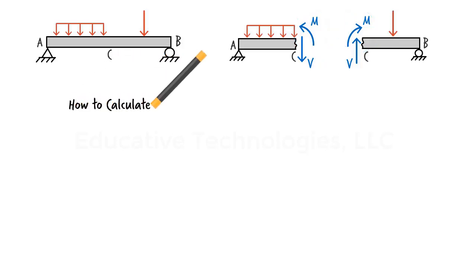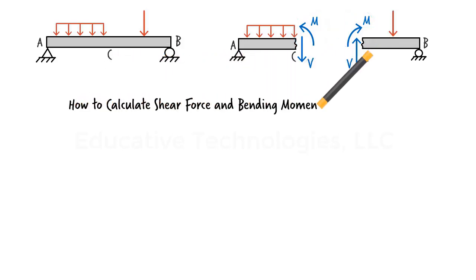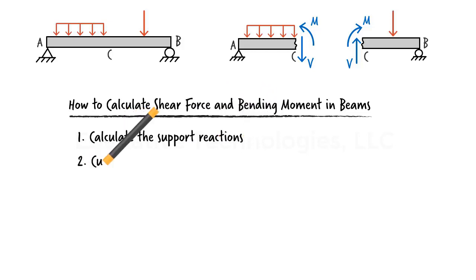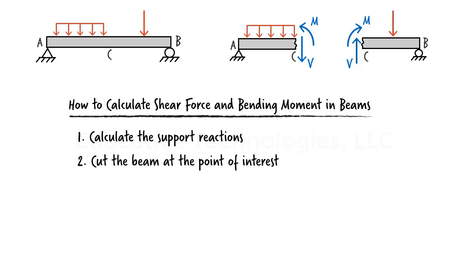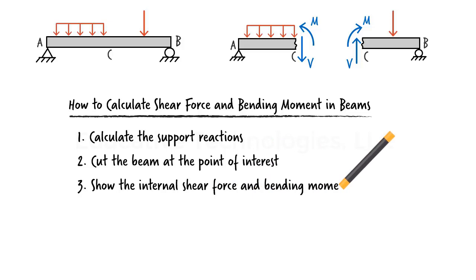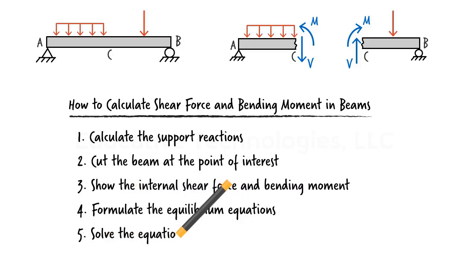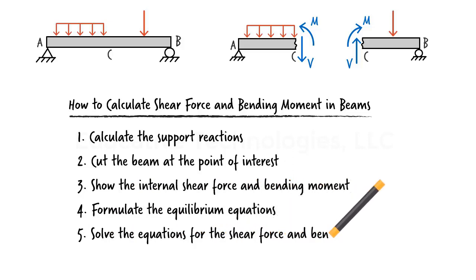Now let's see how we can calculate shear and moment at a point in a beam. The procedure is straightforward: 1. Calculate the beam's support reactions. 2. Conceptually cut the beam at the point of interest. 3. Show the internal forces at the cut point and draw each segment's free body diagram. 4. Formulate the equilibrium equations for either the left or the right segment. 5. Solve the equations for the unknown shear force and bending moment.